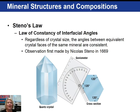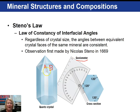An interesting observation made by Nicholas Steno in 1669 is known as the Law of Constancy of Interfacial Angles. What this says is that regardless of how large or small the crystal is, the angles between equivalent crystal faces of the same mineral would be consistent. For example, if we look at the angle between crystal face A and B in a quartz crystal, you could measure that using a goniometer and get a certain number of degrees. Even if you had another quartz crystal that was huge in size, you would still measure the angle between crystal face A and B to be the same number of degrees.